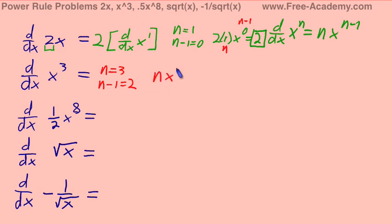Our formula is nx to the n minus 1. Substituting these terms in gives us 3x squared.